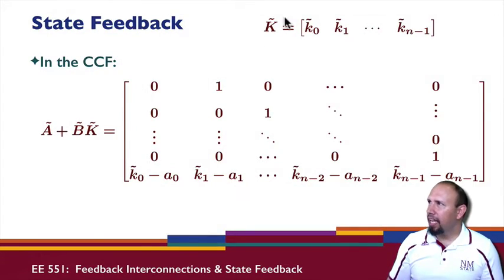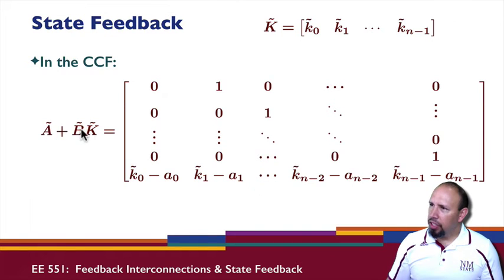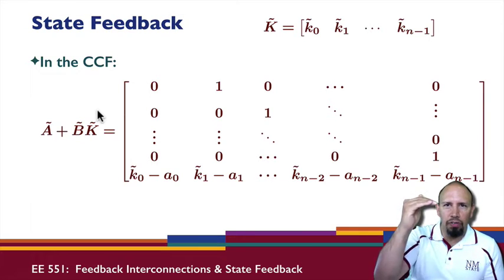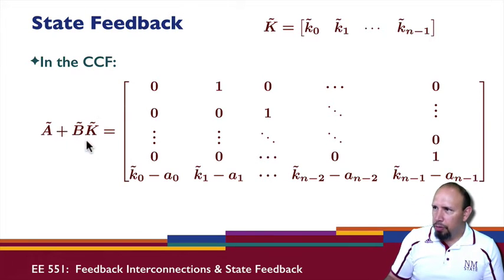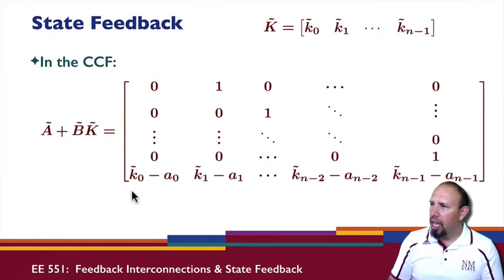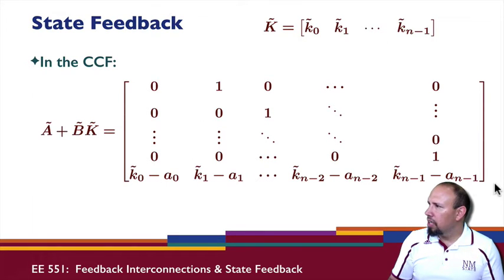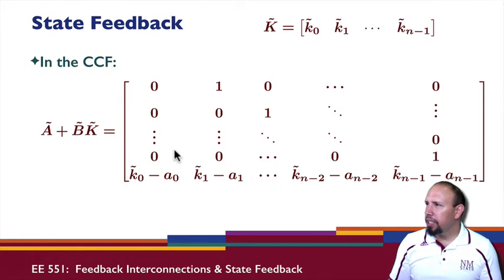Now we're going to apply state feedback for this controllable canonical form. Here's my state feedback gain with the various values k0 through k_{n-1}. When I apply A-tilde plus B-tilde times k-tilde and multiply that all together, notice that B in the controllable canonical form is all zeros and a 1. So this product has all zeros above and then the gain coefficients appearing in each column of the bottom row. This gives my A-tilde plus B-tilde times k-tilde as a companion matrix.